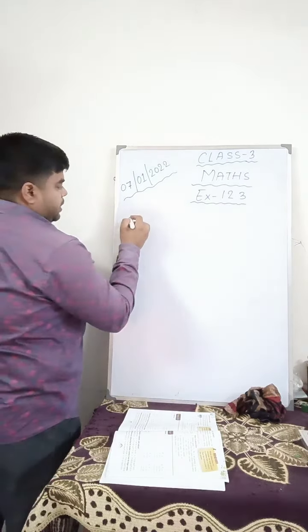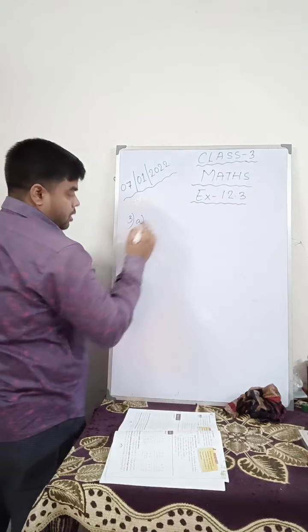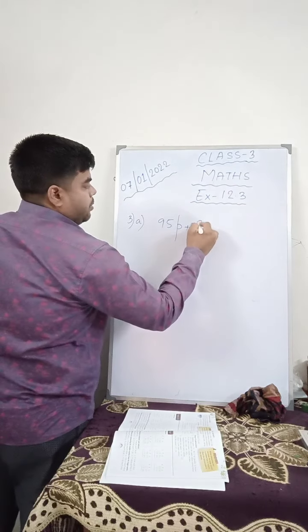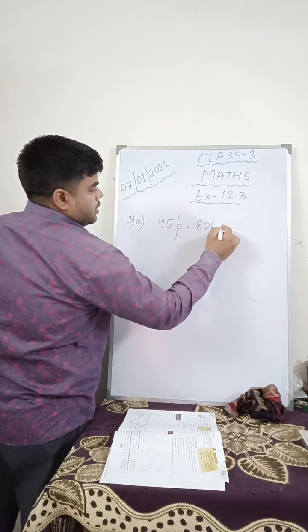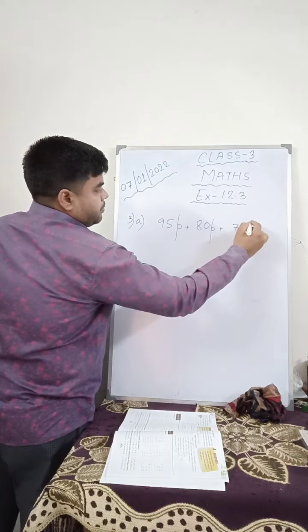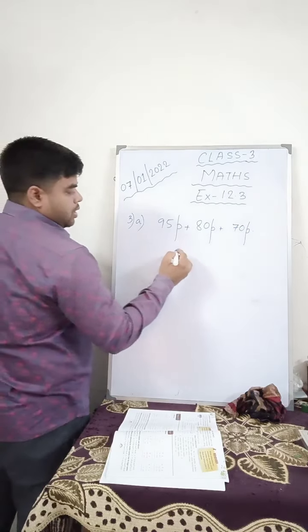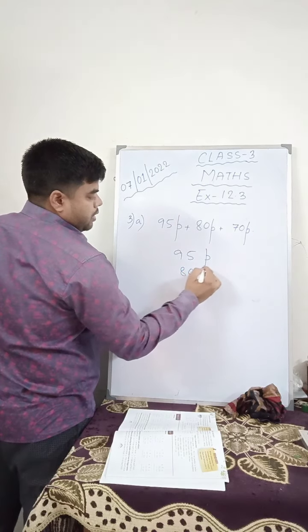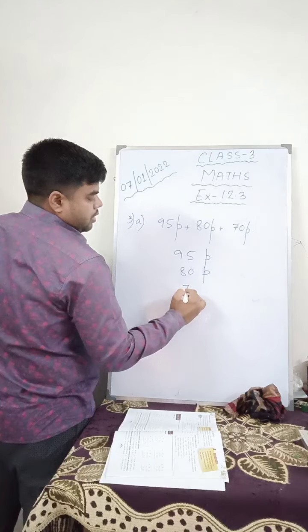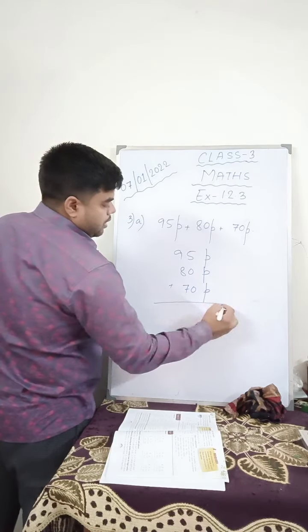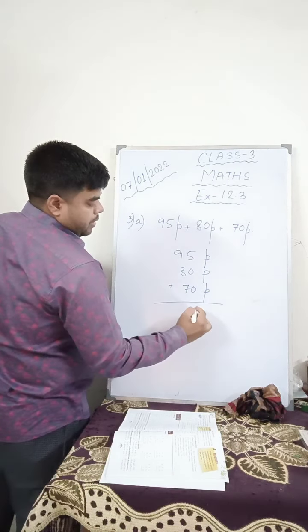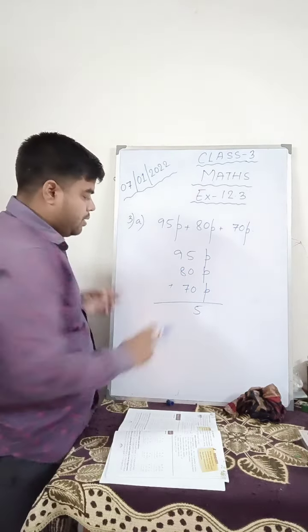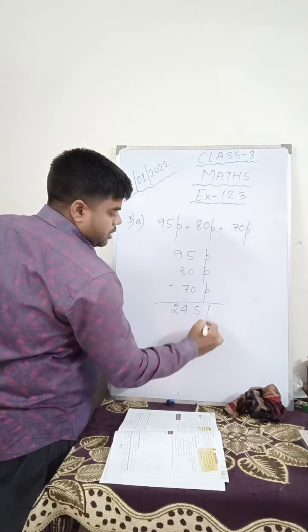Number 3a: 95 paisa plus 80 paisa plus 70 paisa. Add. 9 plus 8 is 17, 17 plus 7 is 24. This is paisa. But they did not ask you the answer in paisa. They have asked you the answer in rupees.